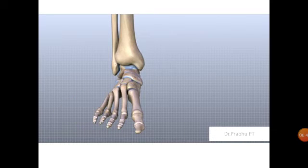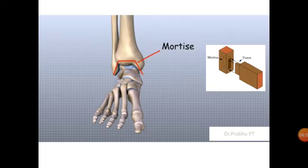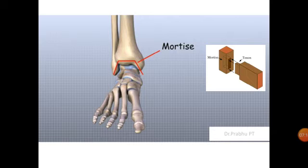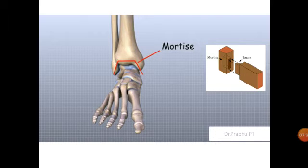Looking at the anterior side, the ankle joint has a shape like a mortise and tenon. The ankle mortise is the bony arch formed by the tibia and the two malleoli. A mortise, as seen in a piece of wooden furniture, is a rectangular hole into which another piece — the tenon — fits. At the ankle, the mortise is a rectangular socket formed by the tibia and fibula, also called the talar mortise.